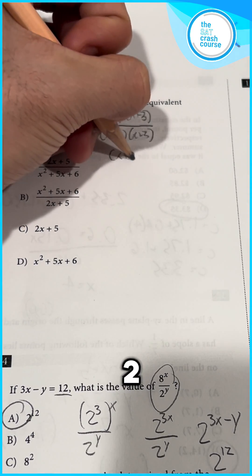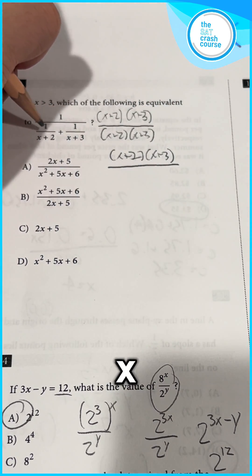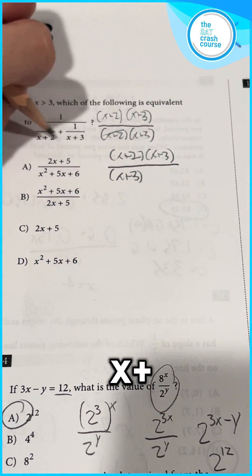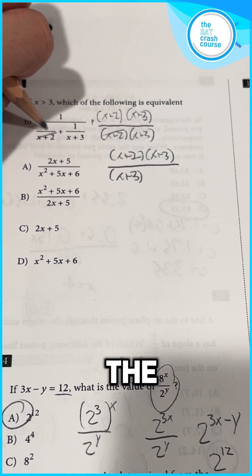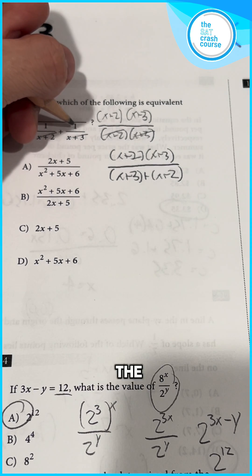This gives us x plus 2 times x plus 3 in the top, and x plus 3 since the x plus 2s cancel out for the first term, plus x plus 2 since the x plus 3s cancel out for the second term.